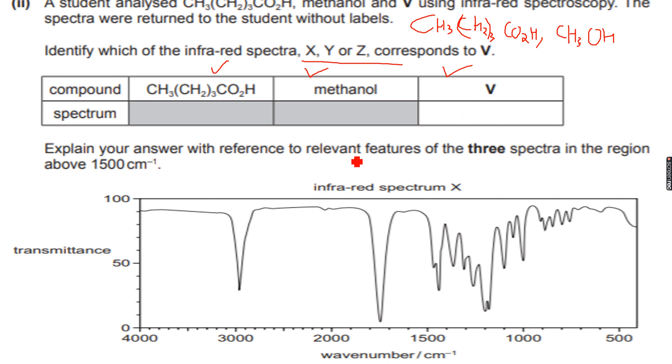So explain your answer with reference to relevant features of the three spectra in the region above 1500 per centimeter. Now we have infrared spectrum X. So if you look at spectrum X, and they have said above 1500 per centimeter, which means we make a line over here. We have to ignore this region. We do not do anything about this region. And the only thing we have to look at is above 1500, which is this region that I'm circling right now. So we see distinctly, we see two peaks in this region. One is this peak. Let's label this one. And the other is this peak. Let's label this two. So we have two distinct peaks in this region.